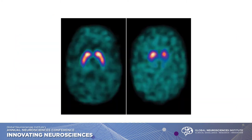If you need something more objective, there is a DAT scan — Dopamine Active Transporter. This is useful in helping to distinguish Parkinson's tremor from other types, whether essential tremor or drug-induced Parkinsonism. It looks at how well the brain metabolizes dopamine — specifically presynaptic dopamine deficit. If there is a deficiency, you go from a nice comma appearance to two smaller period appearances, or it'll be asymmetric — one side like a period and the other like a comma.